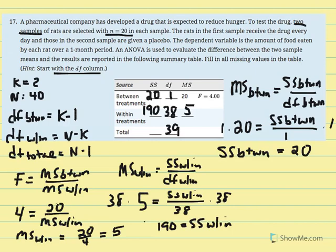All that's left is SS total: SS between plus SS within equals 20 plus 190 equals 210. We were only given two original values, but using the equations we've learned we can fill in what's missing. It's easiest to begin with the DF column and work from there, using the context of the research to provide K and N for calculating degrees of freedom.